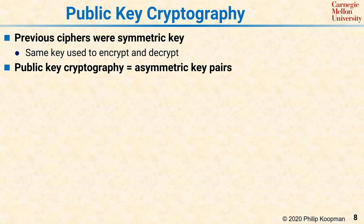Up to this point, all the encryption algorithms we've looked at use the same key to encrypt and decrypt. Those are called symmetric key cryptographic systems, because the encryption and decryption are mirror images of each other using the same key. There are some significant disadvantages to that — the big one is that you would somehow have to get that secret key to someone else who might be on the other side of the world.